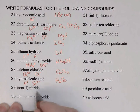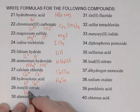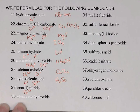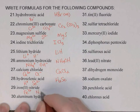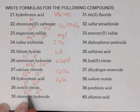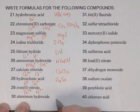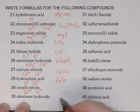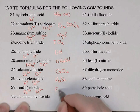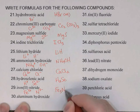Iron(II) nitride is a metal and non-metal, so it's ionic. The iron is type 2, which is why there's a Roman numeral; its charge must be 2+. Nitride is N, and from the periodic table its charge is 3-. Iron is 2+ and nitrogen is 3-, so we need three irons and two nitrogens. Two and three both go into six as the lowest common multiple: Fe3N2.